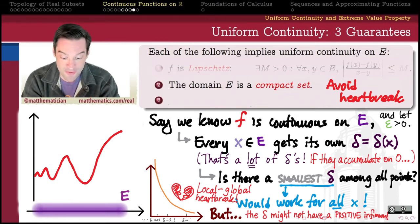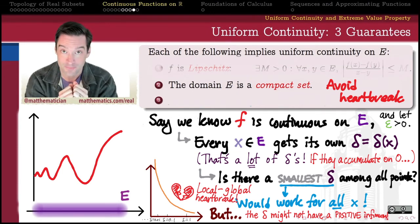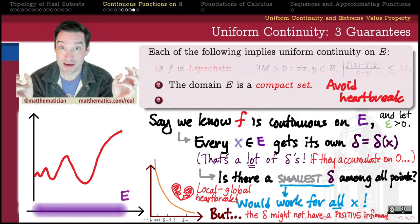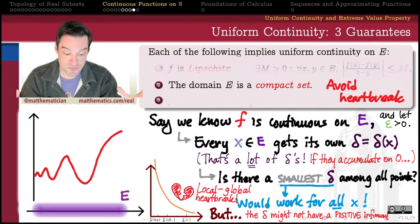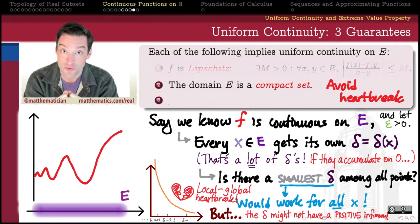Compactness was exactly the notion that we came up with as a way to avoid that heartbreak. On a compact set, if I have a collection of local criteria, local truths that hold on a collection of open sets across my set, then by cover finiteness, I can extract a finite subcover. Only finitely many of those truths are needed to blanket my entire set of quantification, my entire domain in this case. And once we only have finitely many truths to choose from, things get a lot easier. We can avoid that heartbreak.